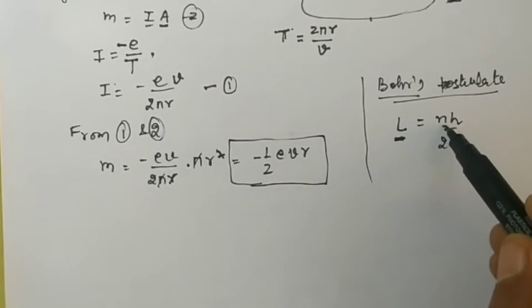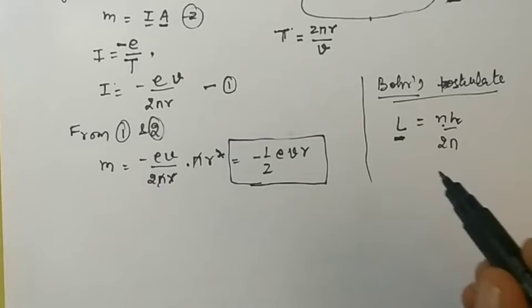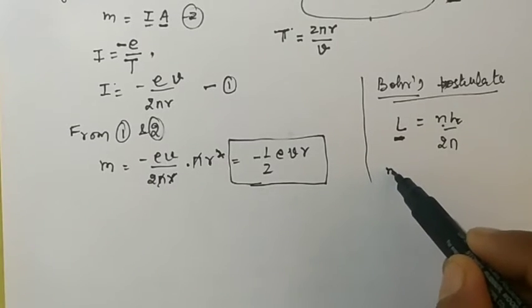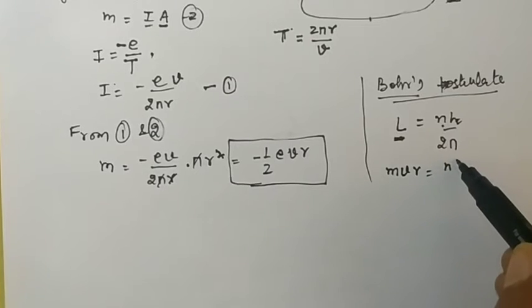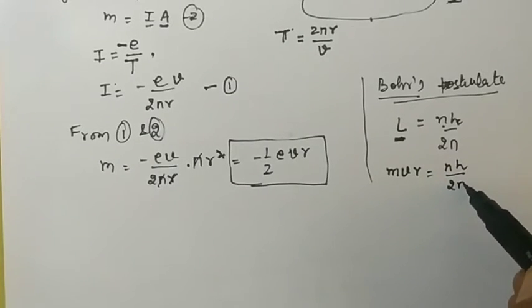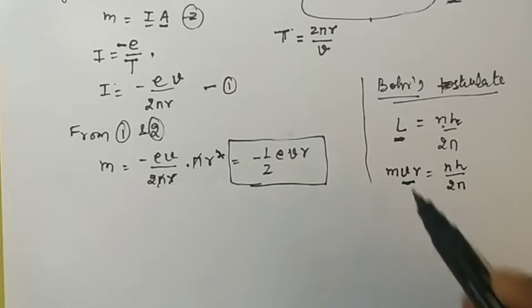We know that angular momentum is equal to mvr, so it becomes nh/2π. From here you can say that vr is equal to nh/2πm.